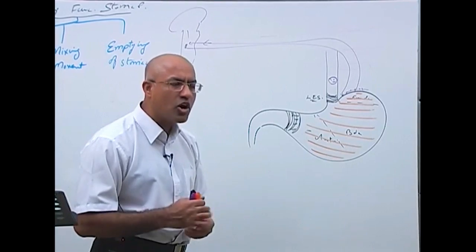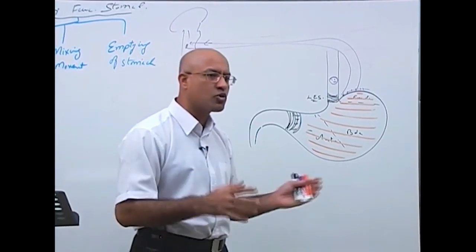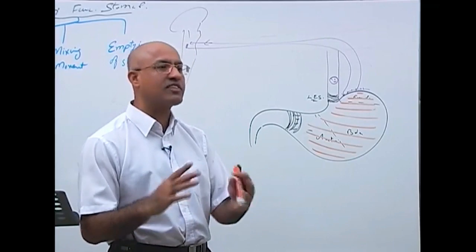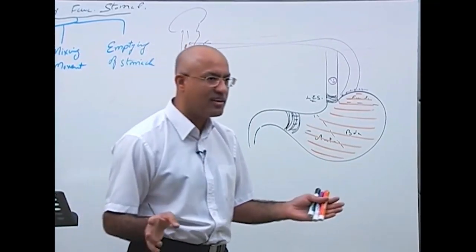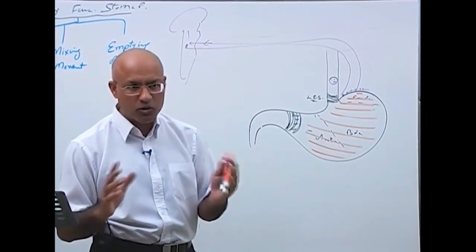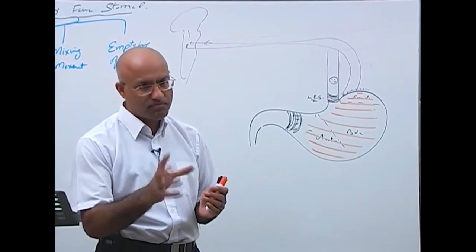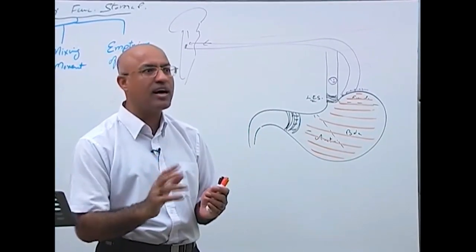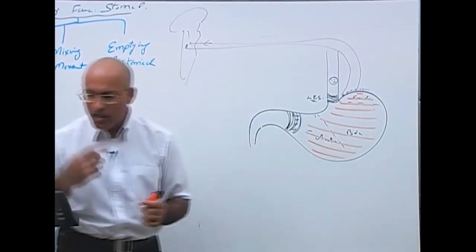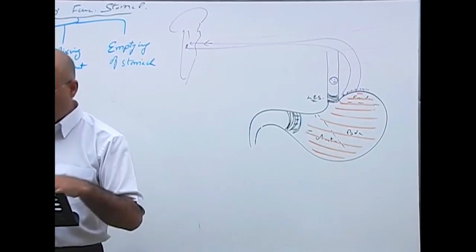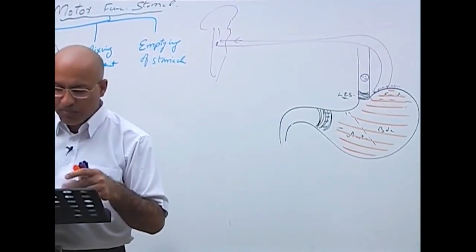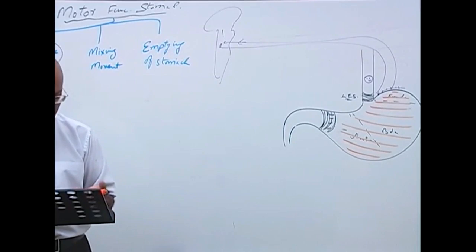Normally, a human stomach can store from one liter to one and a half liters of food. Once the food is there, let us talk about how the mixing movements start.